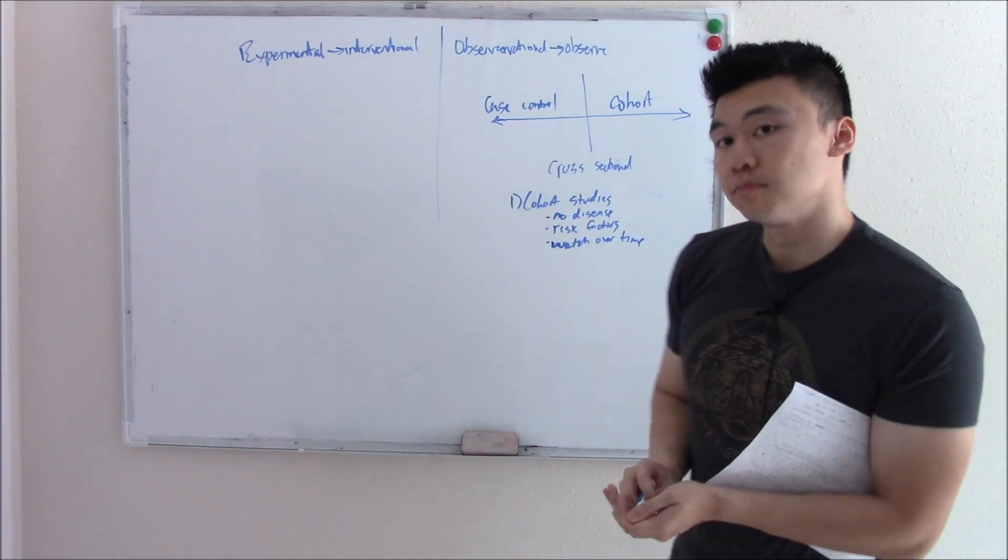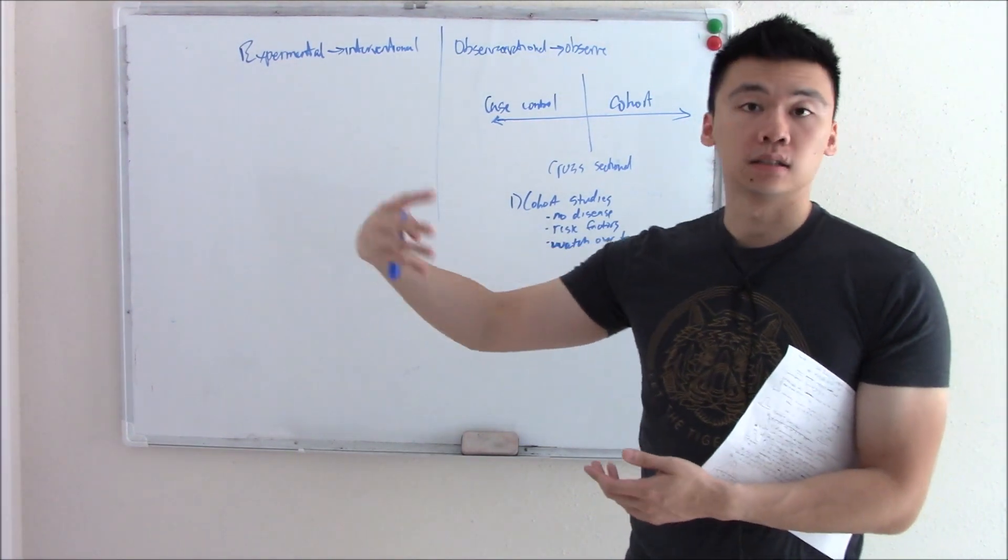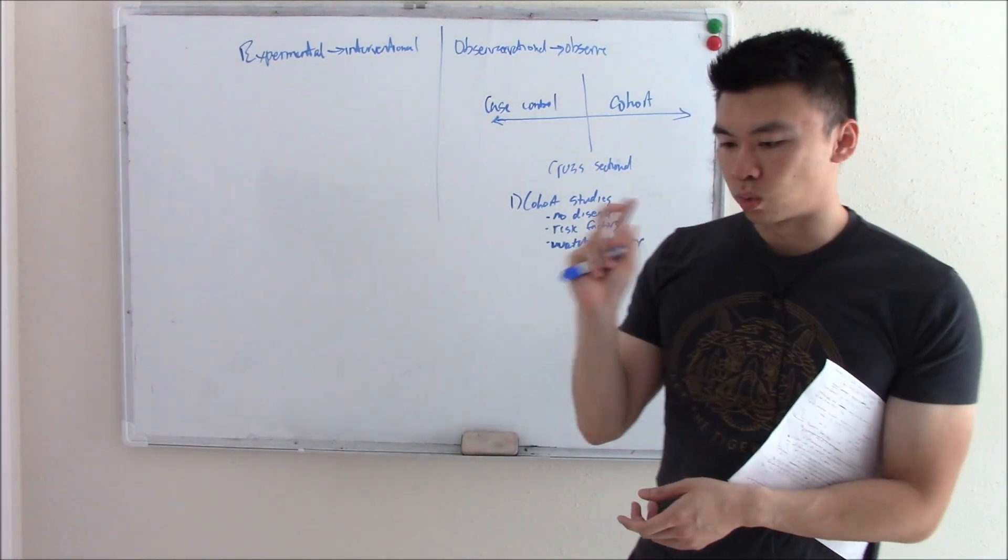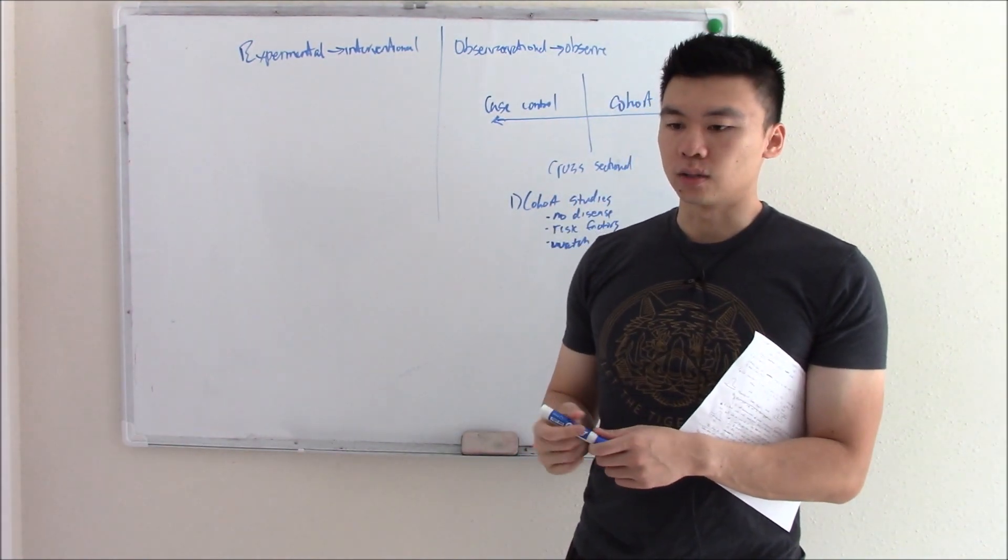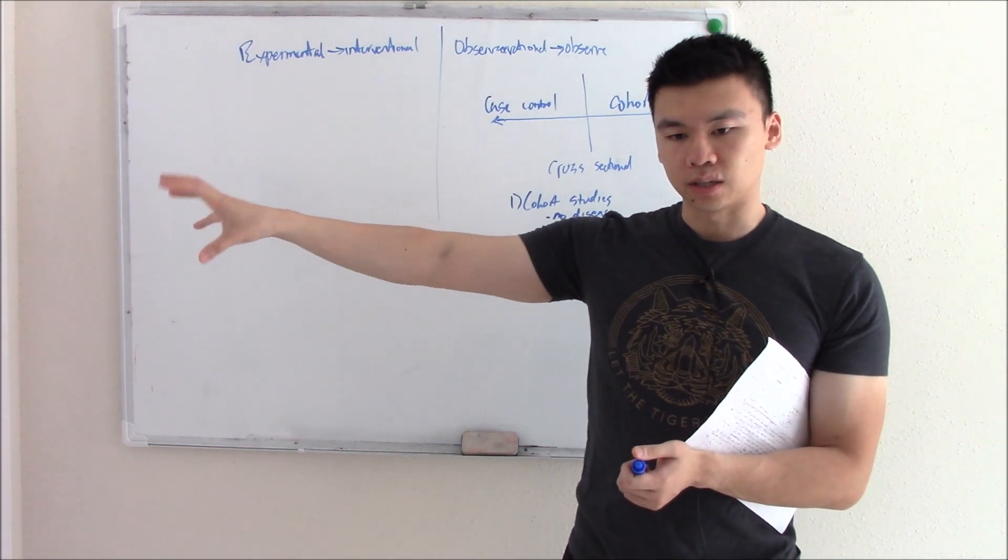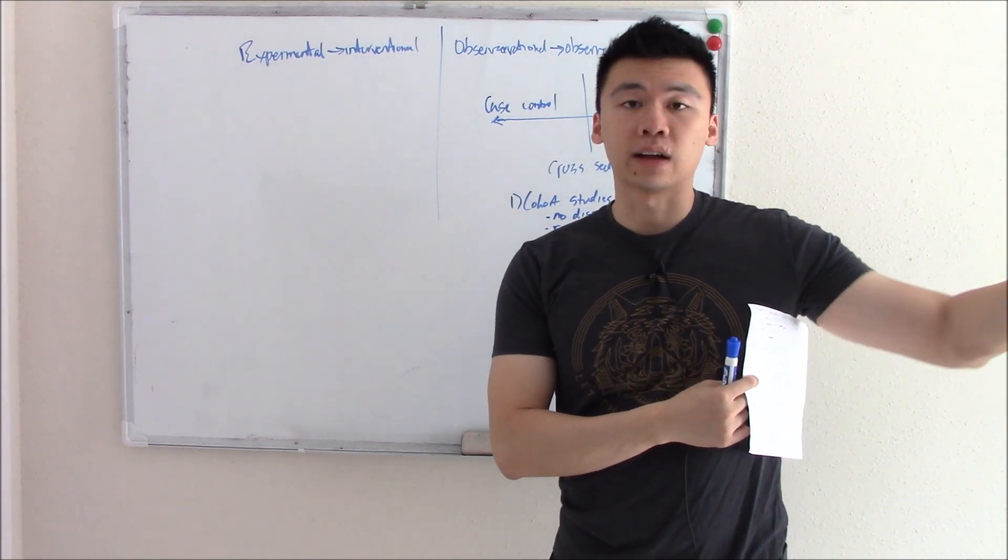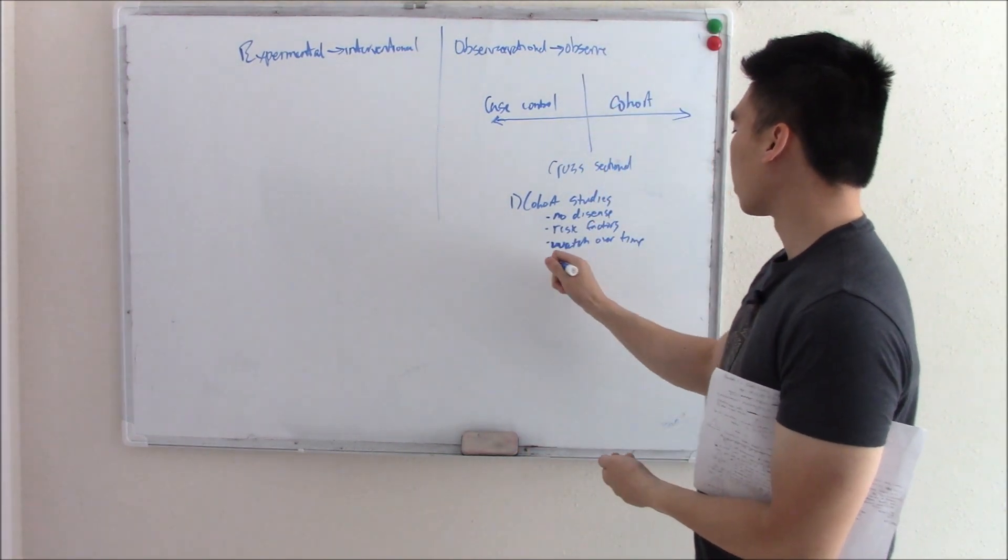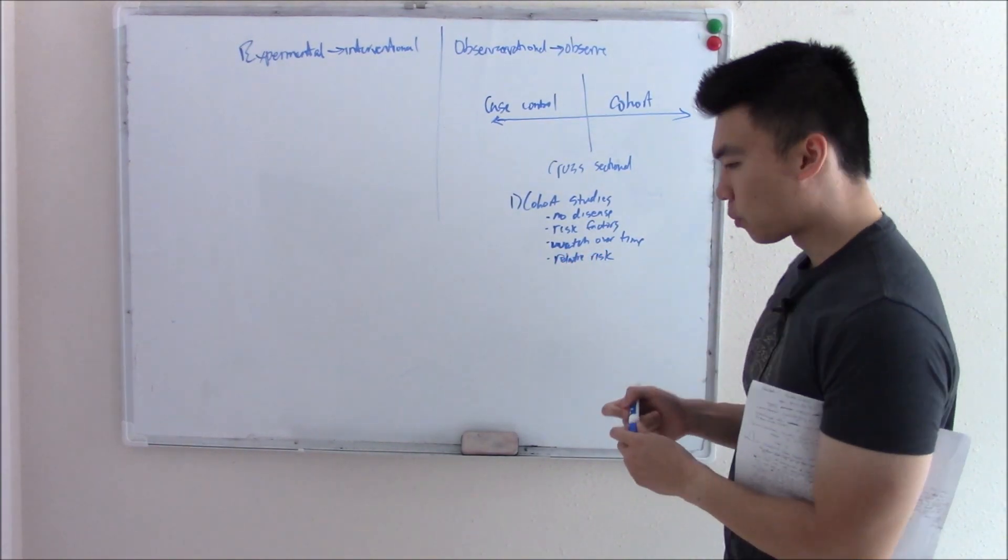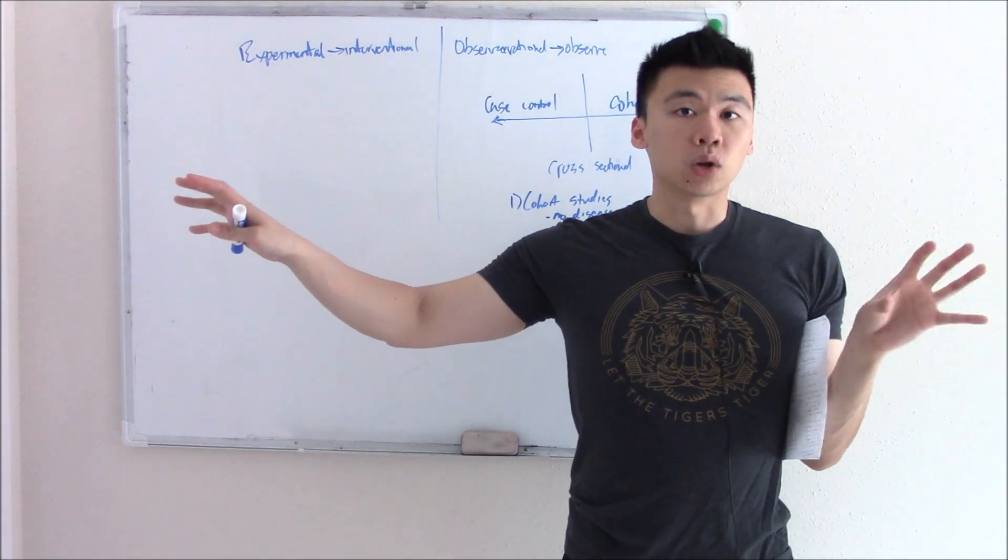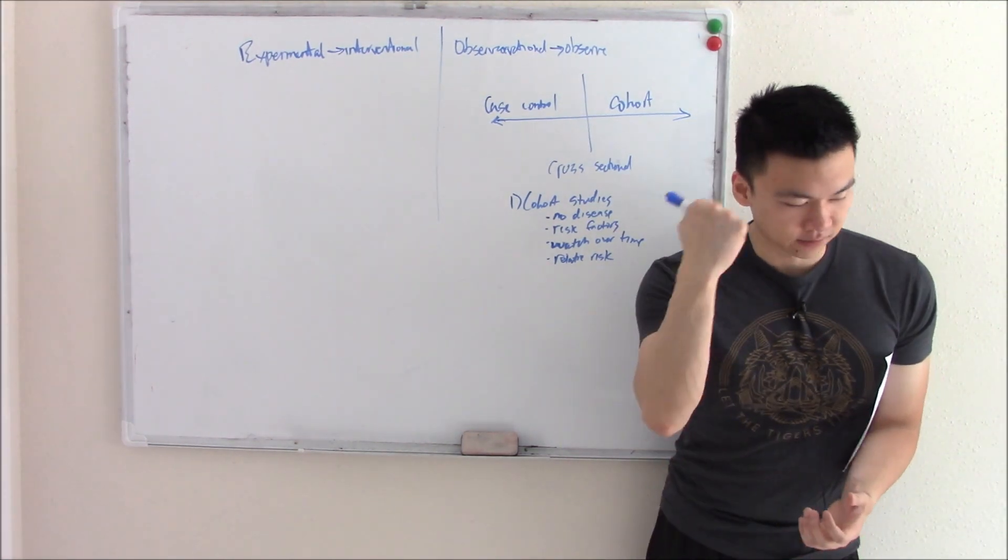A great example would be picking a group of smokers that don't have lung cancer, and you kind of watch them over time and see if they develop lung cancer. You want to look at the risk factor, the smoking in our case, and you want to say what's their risk of developing cancer because of smoking as opposed to people that don't smoke, relative to people that don't have that risk factor. So cohort is great for measuring what we call relative risk.